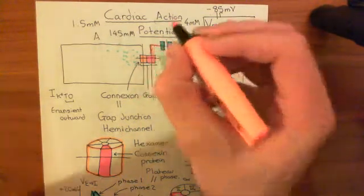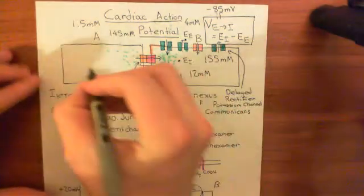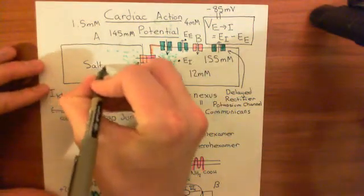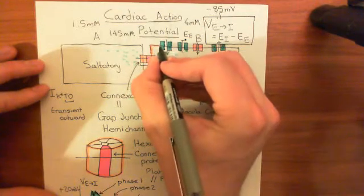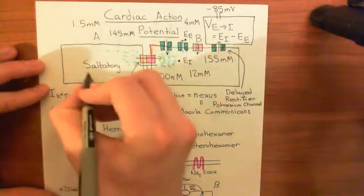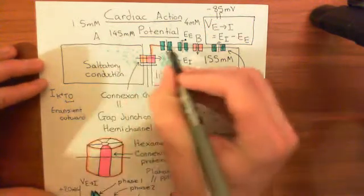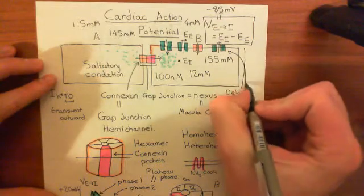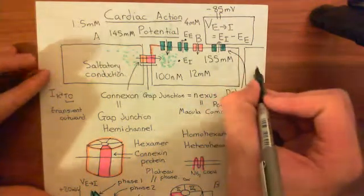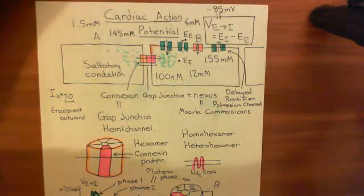So you get this spreading of the action potential where an action potential at one point of the membrane induces an action potential in the neighbouring portion, and so on. That is what's known as saltatory conduction — the idea of one piece of membrane undergoing an action potential inducing its neighbours to undergo action potentials, etc. This will spread over, connected by gap junctions to neighbours, and the process will continue, spreading along the myocardial cells.